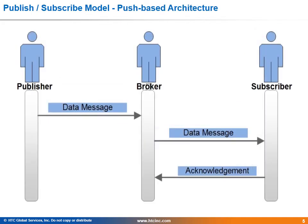Push-based architecture. The figure describes the interaction between the publisher and subscriber in a push-based architecture. The transfer of a data message is triggered by predefined events at a publisher. The publisher then pushes the data message to a broker and the broker multicasts that message to all corresponding subscribers. Therefore, a subscriber can have a desired data message without having to request for it. Subscriber acknowledgments should be sent to the broker in order to keep track of successful or failure transmissions.